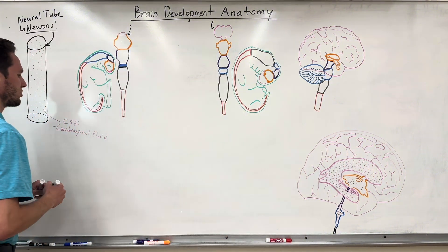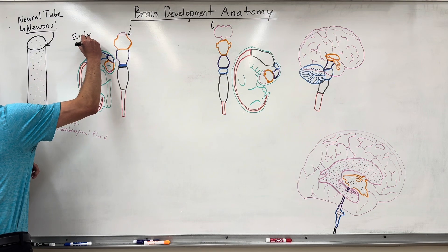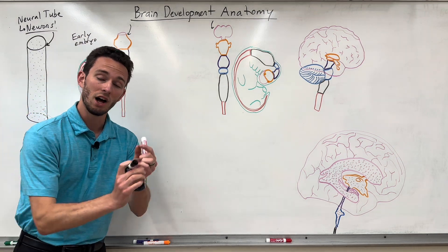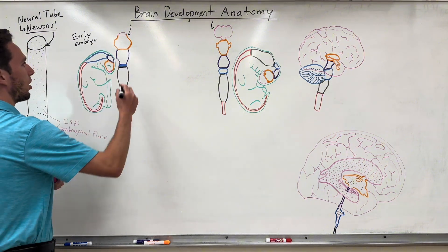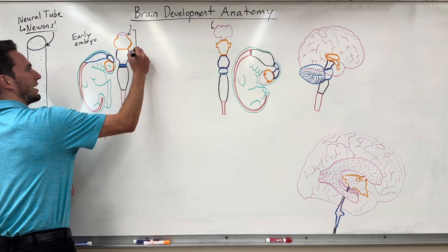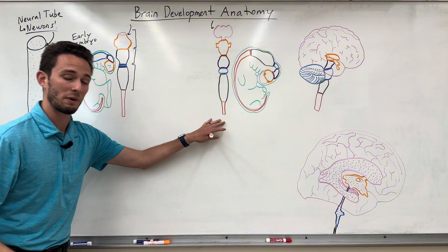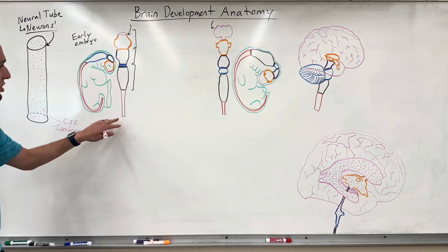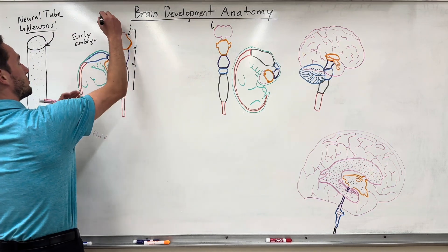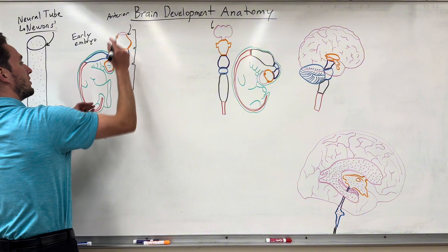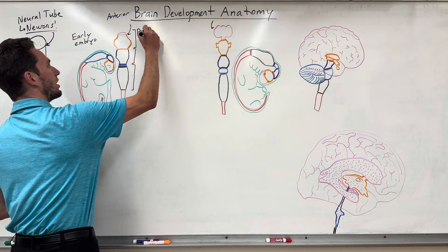Starting with the early embryo, we see three distinct structures that have formed on the neural tube — we're differentiating some tissue. The first part is at the front, the second is in the middle, and the third is towards the back, with the spinal cord continuing in red. The first part, the anterior portion of this developing embryo, is called the prosencephalon.